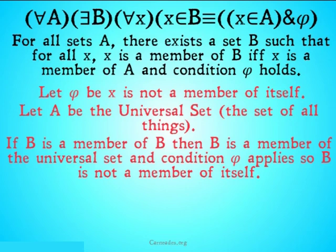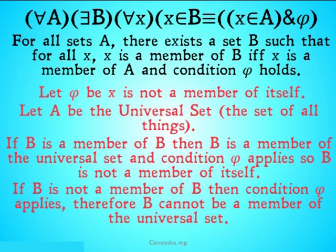Uh-oh, we seem to be halfway on our way to the paradox. The problem is, and the way they're going to get out of it, is if B is not a member of B, then condition φ does apply. Therefore, B cannot be a member of the universal set. The reason it can't be a member of the universal set is basically we know that condition φ applies, but we also know that B is not a member of B. So it's not going to be the case that B is a member of A and condition φ applies.